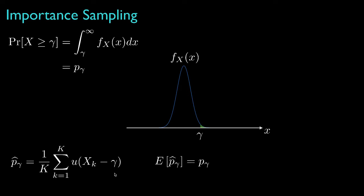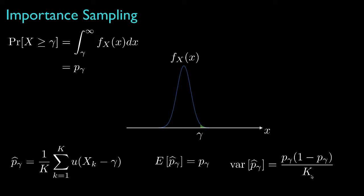Because the summation is equivalent to a binomial random variable with k trials and a success probability equal to P sub gamma, the mean for this estimator is the true tail probability. The variance is the product of the probability times one minus the probability, divided by the number of trials. Based on this, we can determine the number of trials required to attain a particular estimator variance or estimator standard deviation.